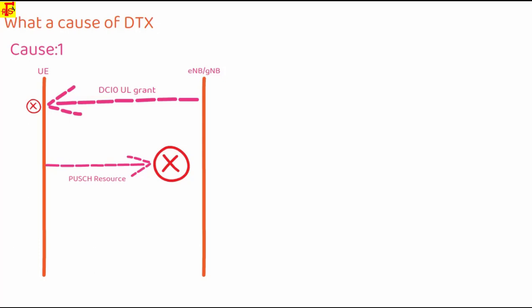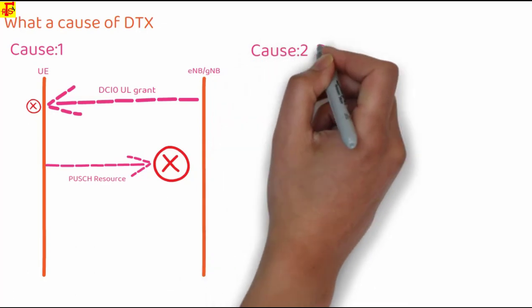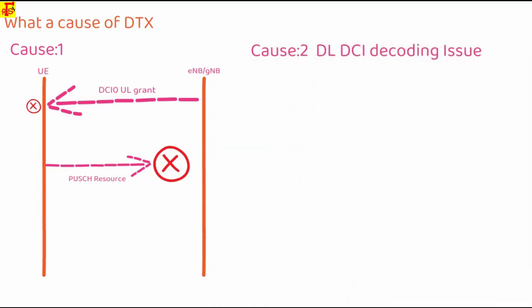Or PUSCH data transmitted from the UE but not received by eNodeB. So this is the reason to detect DTX.